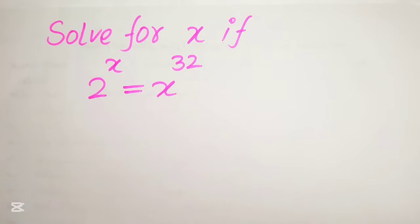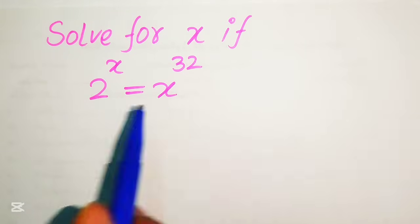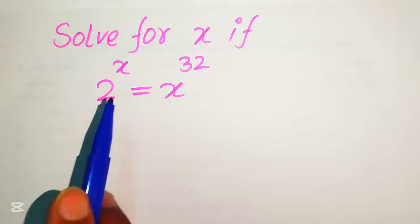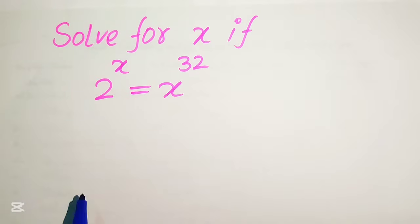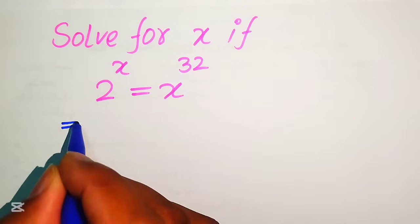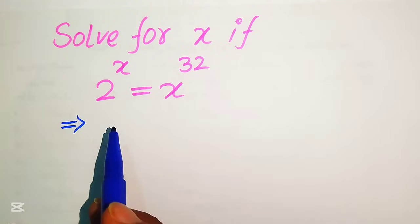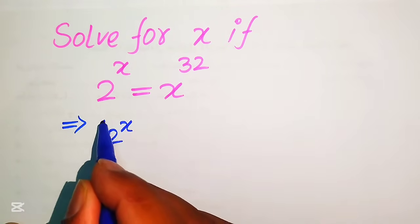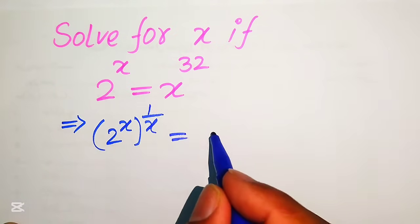Our first target is to move the variable term to the right hand side and the constant term to the left hand side. We need to move x to the right hand side and 32 to the left hand side. To eliminate x from the left hand side, we take the x-th root on both sides, or in other words, we take 1 over x power on both sides.